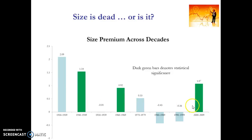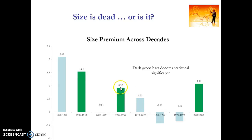Breaking down the size effect across decades, what we can see here are the average returns on a size premium — the return differential between the smallest and largest decile of stocks using US market data. The dark green bars represent return differences between small and large cap stocks that are statistically significant. We can see quite a large size effect in the 1930s and 1940s, which didn't tend to exist in the 1950s, but there was again a large size effect in the 1960s and 1970s — this is Siegel's point. Where studies started talking about the disappearing size effect was the 1980s, because in the 1980s and 1990s the size premium was negative.